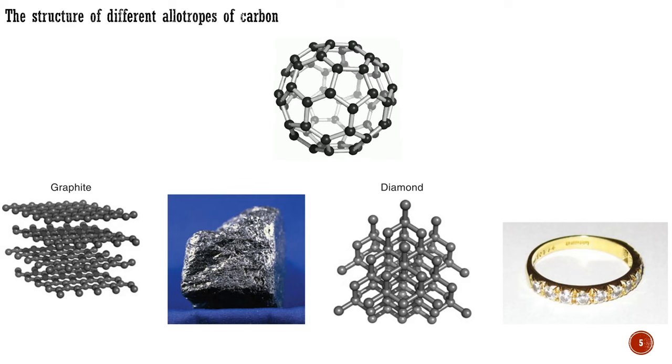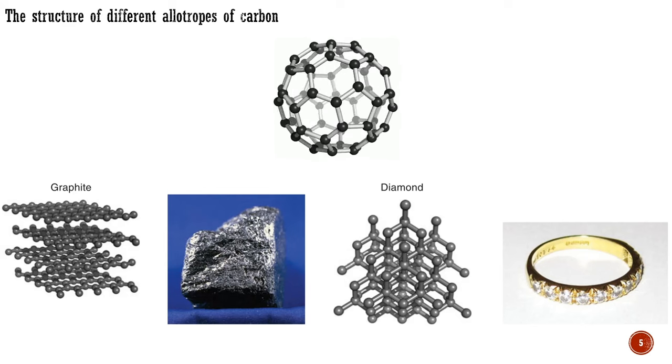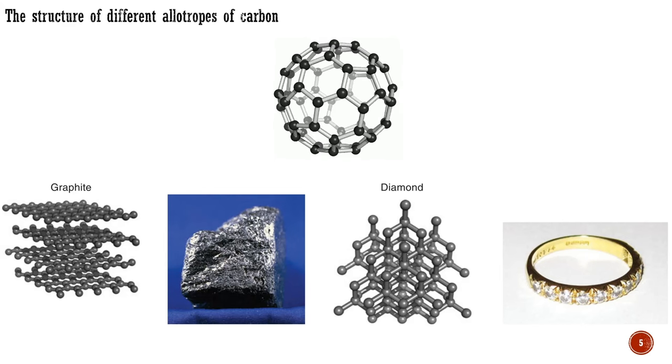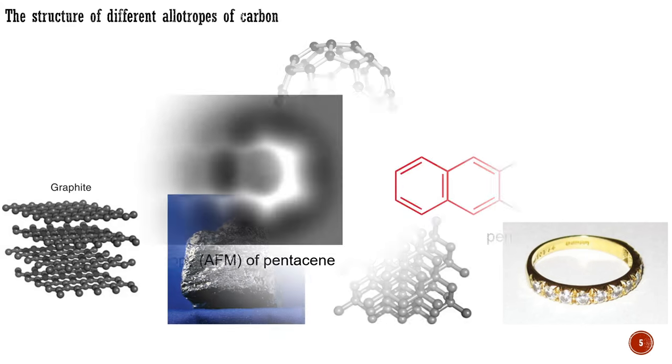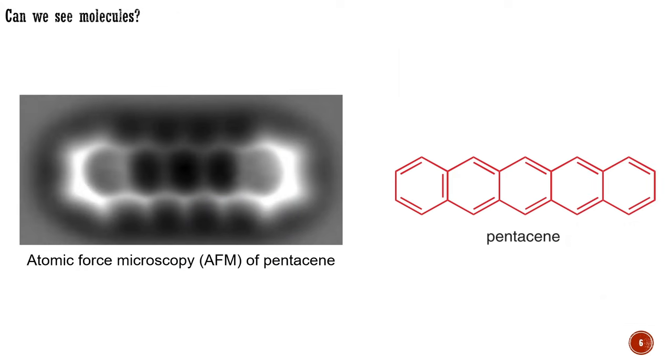Graphite has carbon atoms arranged in sheets of hexagons, while diamond has them arranged in a tetrahedral array. We understand the shapes of molecules through methods like atomic force microscopy, which allows us to see them, though not literally, of course. Atomic force microscopy reveals the shape of pentacene, the molecule we typically represent with the structure you see here, as shown on the left. This is the closest we can get to actually seeing the atoms themselves.